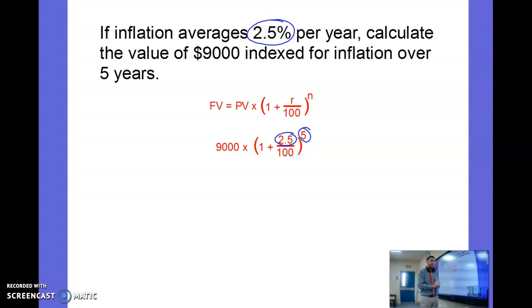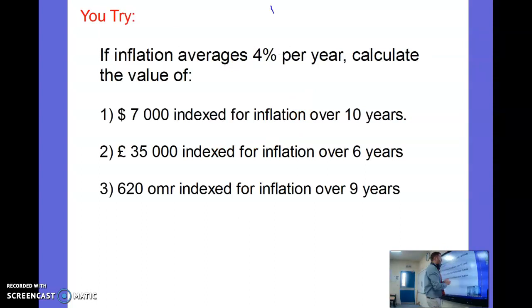N is the number of years, so we can substitute those numbers in and we get $10,182.67. So that nine thousand dollars in five years time - that'll be the equivalent of ten thousand one hundred and eighty-two dollars and sixty-seven cents.